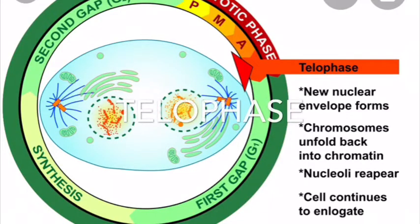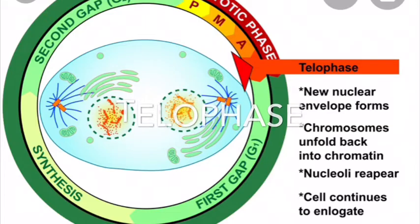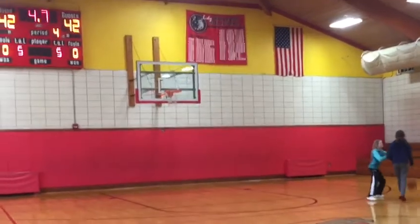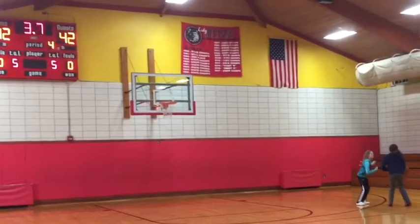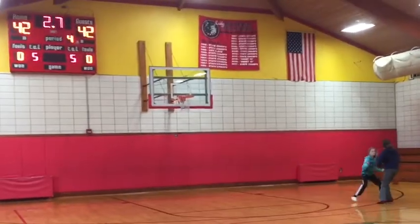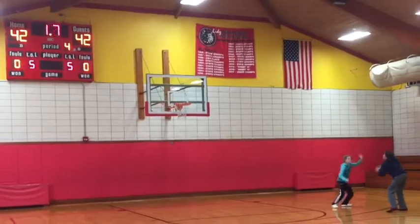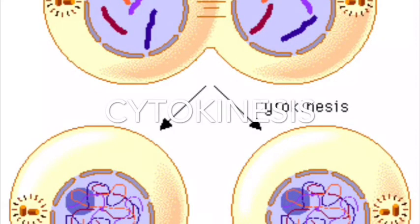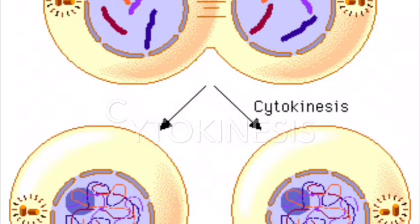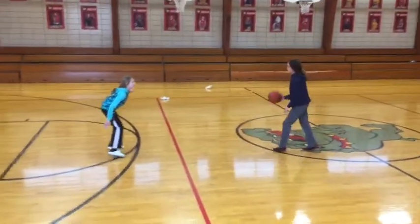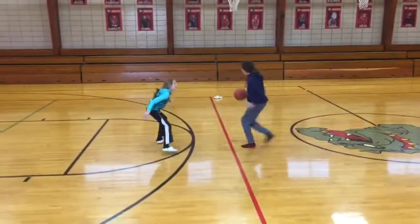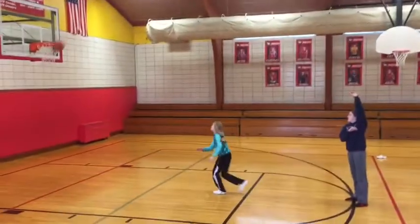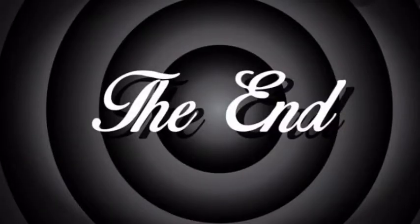Telophase is compared to Overtime because the chromosomes unfold back into chromatin, like how whenever you thought the game was over it started a new one. We compared cytokinesis to defense or offense because the cell divides into two different things, like how offense and defense are opposites.